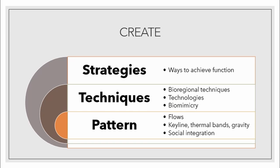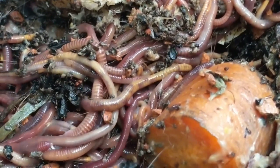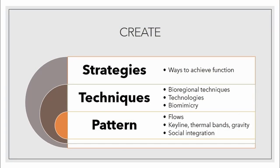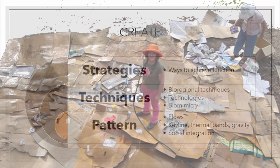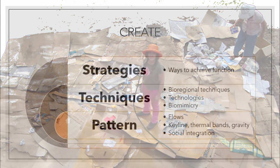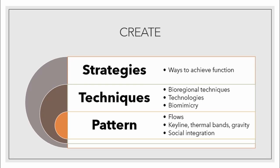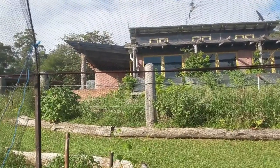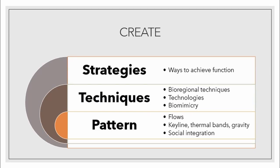Now we move on to the stage of creating the design. We've got ideas for strategies to achieve functions — remember the strategy of cycling waste using chickens, but we can also use worms and compost piles. The strategy is to cycle the nutrients, but the different ways to do that — with chickens or a compost pile — are the techniques. When we look at different techniques in a design, we're not just looking at different elements but also technologies or ways to imitate nature. For instance, choosing solar panels is different from growing wood for a wood fuel stove, both capturing solar energy in different ways.